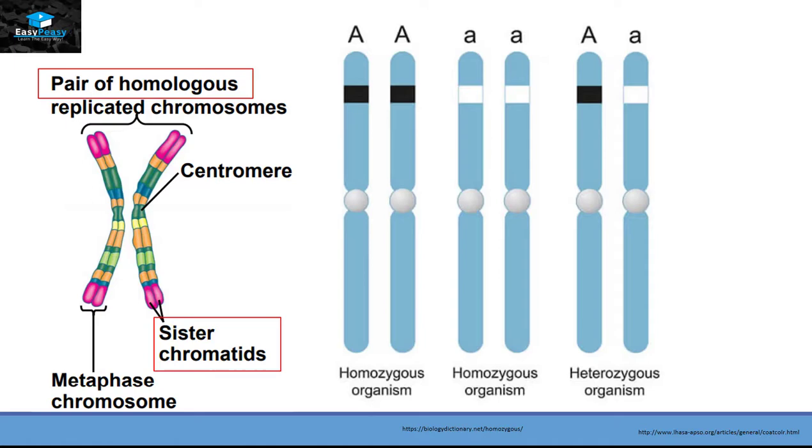Now, each gene has a specific location on a chromosome and that location is called the gene locus. And each gene normally has two variations just like capital A and small a. So these two variations are called alleles of the same gene.